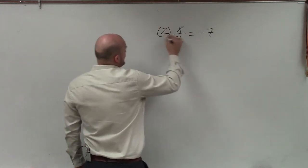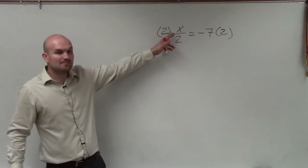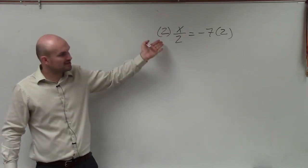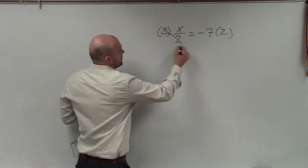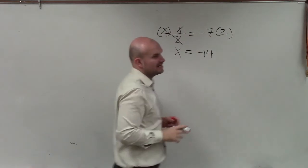So we multiply by 2 on both sides. Now, I am taking my variable x, multiplying by 2 and dividing by 2. That pretty much just reduces that down to 1. 1 times x is just going to leave you with x, which is equal to negative 7 times 2, which is negative 14.